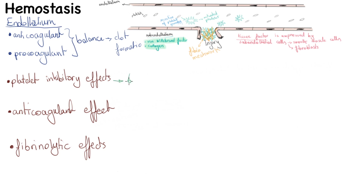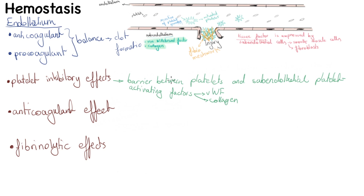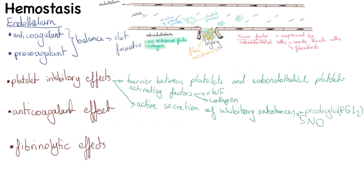For platelet inhibitory effects, normal intact endothelium acts as a barrier between platelets in the lumen and subendothelial components such as von Willebrand factor and collagen, limiting platelet activation. The endothelium also actively releases substances that inhibit platelet activation: prostacyclin (PGI2), nitric oxide (NO), and adenosine dephosphatase, which degrades ADP — a potent platelet activator.